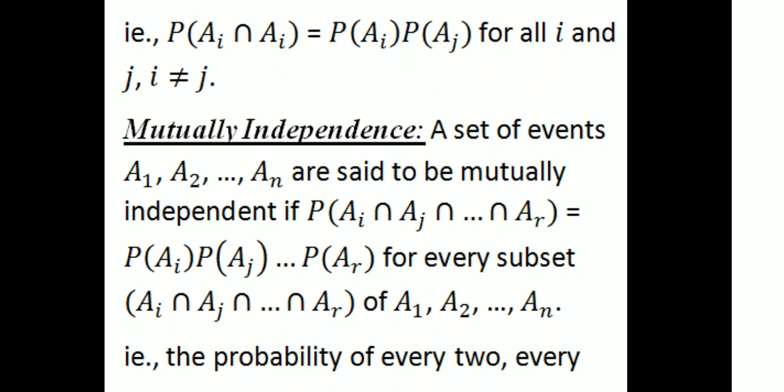That is, pairwise independence means: probability of Ai intersection Aj equals probability of Ai into probability of Aj, for all i not equal to j.